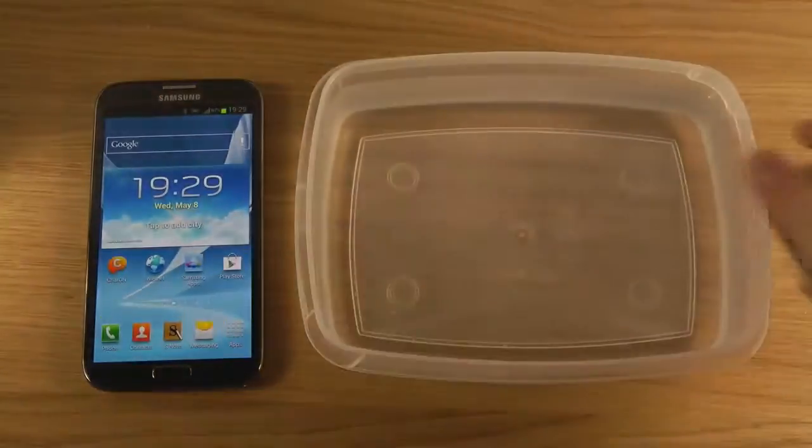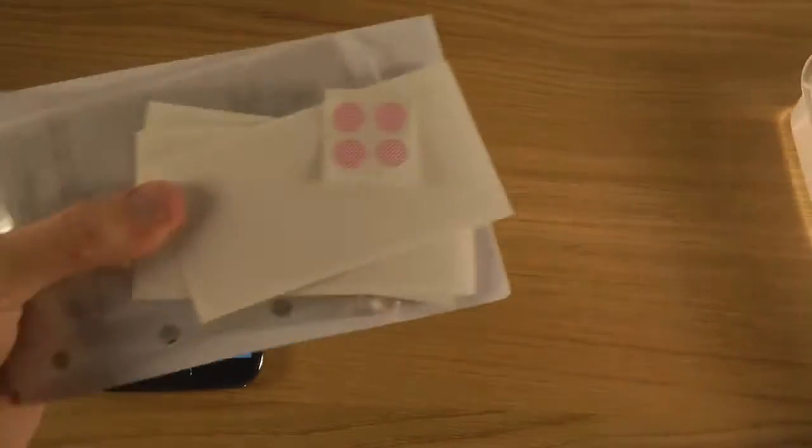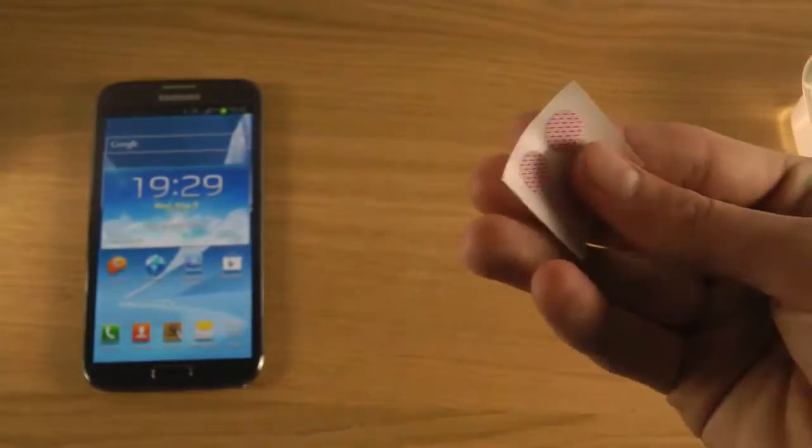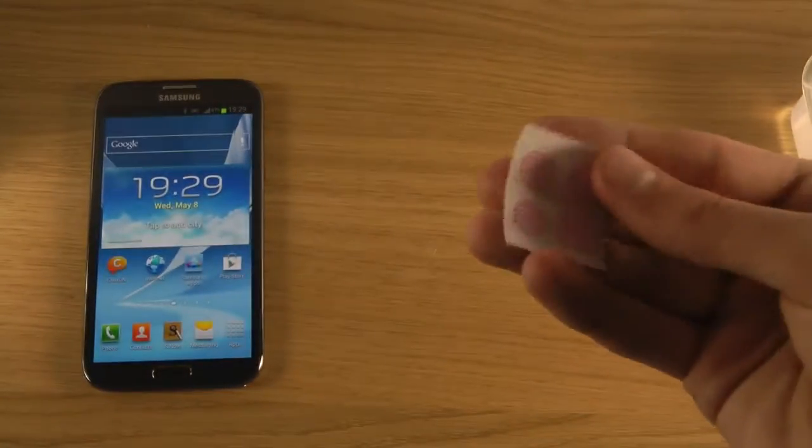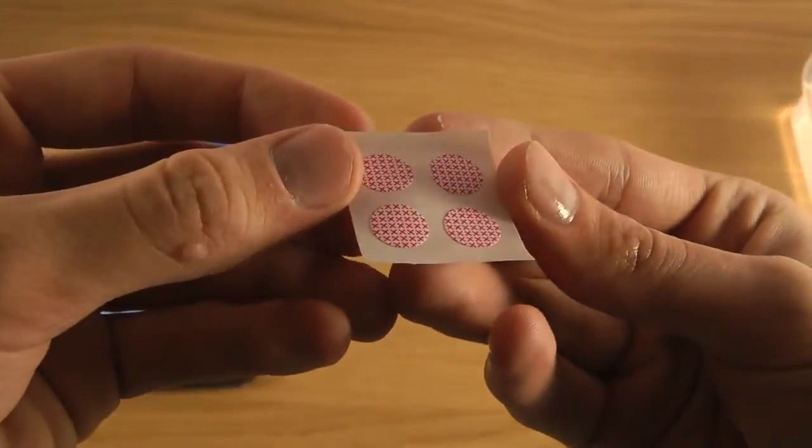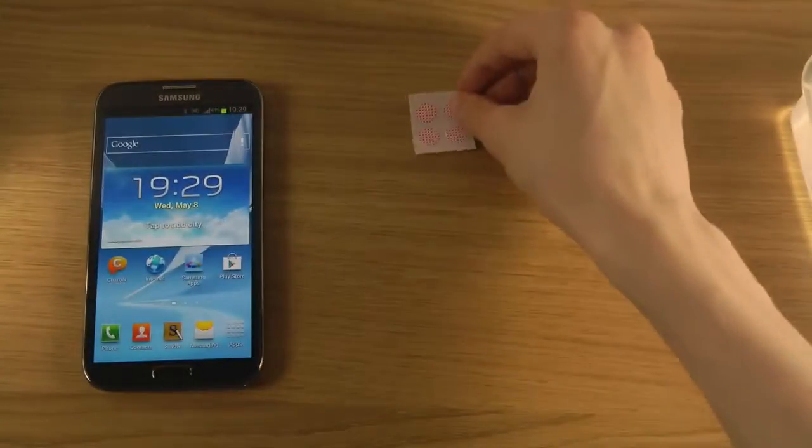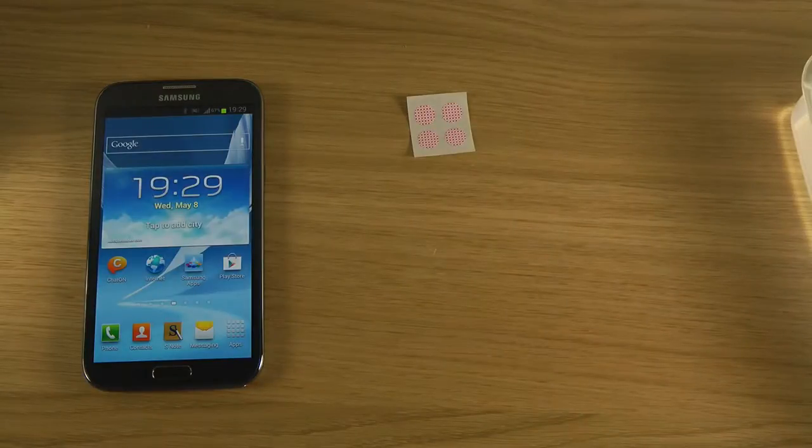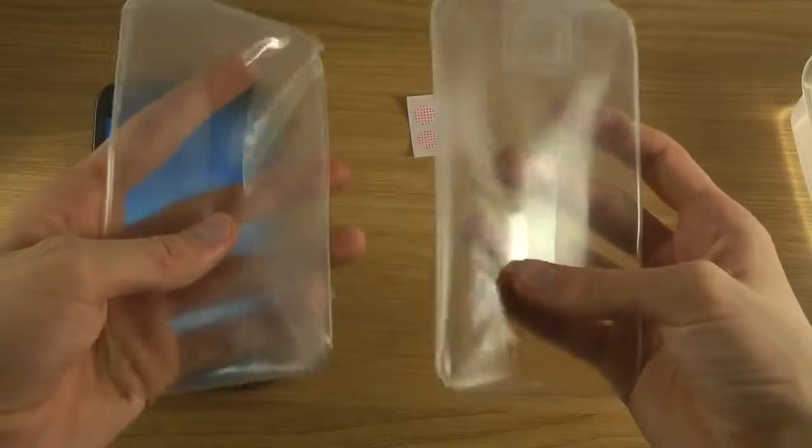This is what we get. First, we get one of these stickers that you apply on the back of the phone to make sure there's no water coming into the phone. Then this one will change color and you can instantly remove your phone from the water.